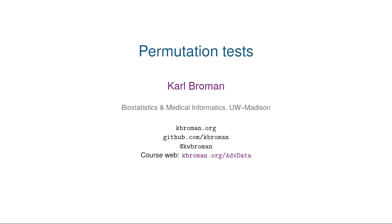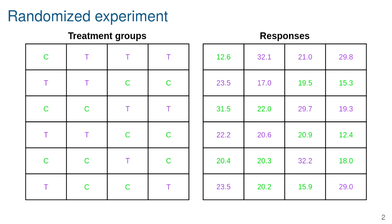Today I'm going to talk about permutation tests, which is one of my favorite tools. I'll start with a hypothetical example of a randomized experiment: a set of 24 subjects that were randomly assigned to one of two groups, either a treatment or a control — purple T's for treated and green C's for control — and here are the set of responses that we see.